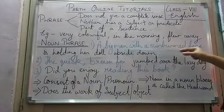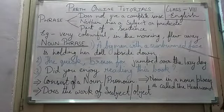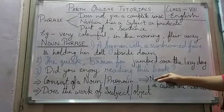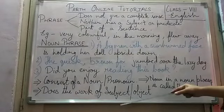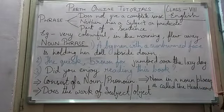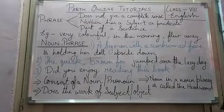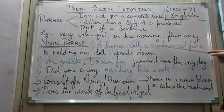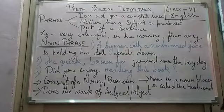First example: 'A big man with a sunburned face is holding her door upside down.' This is a group of words describing the big man. A noun phrase consists of a noun — or it can consist of a pronoun also. Secondly, it does the work of a subject or object. Here it is working as the subject. The complete group of words 'a big man with a sunburned face' is the noun phrase, and 'man' is called the head word — the noun about which we are describing.